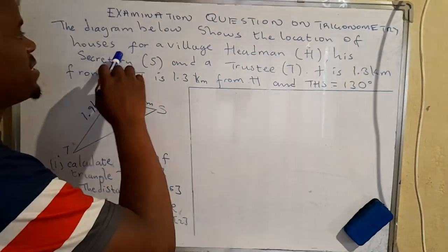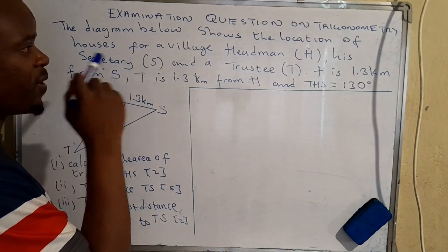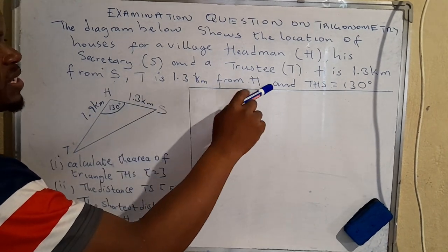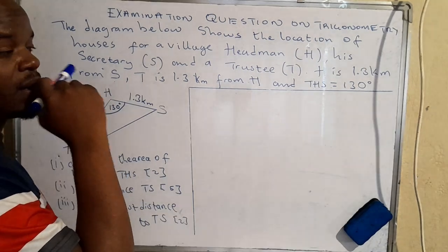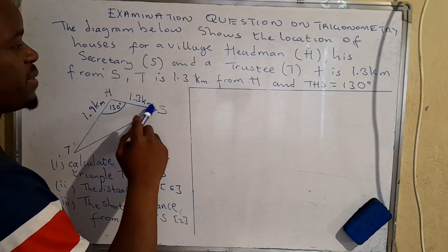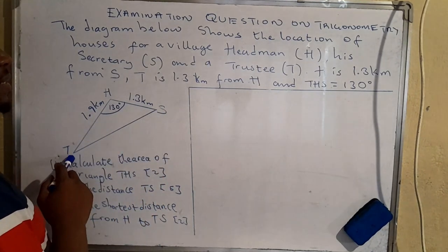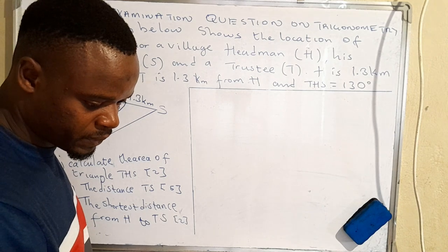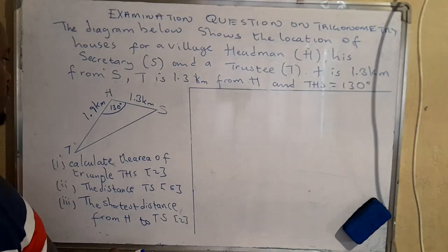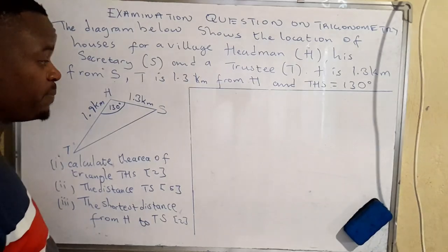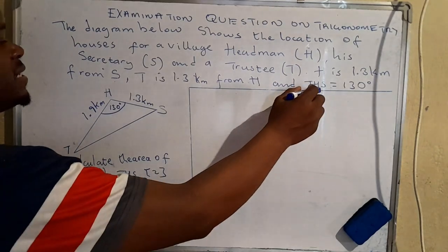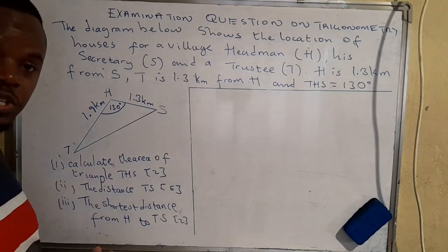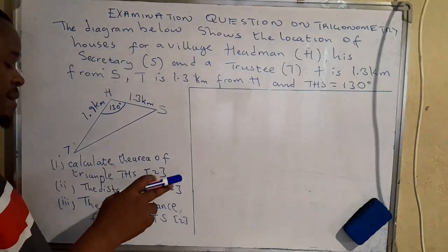The problem reads: the diagram below shows the location of houses for your village headman H, secretary S, and treasurer T. H is 1.3 kilometers from S, and T is 1.9 kilometers from H. The angle THS is equal to 130 degrees. The question asks us to calculate the area of the triangle.